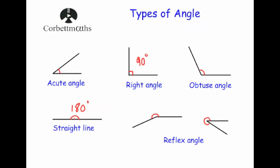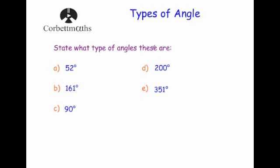Let's have a look at some questions. It says state what type of angles these are. So 52 degrees — because it's bigger than 0 but less than 90, it's going to be an acute angle.